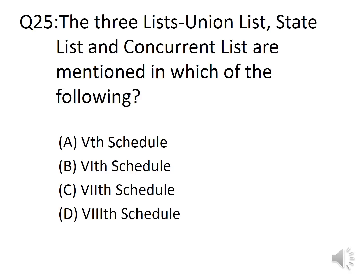Question 25: The three lists — Union List, State List, and Concurrent List — are mentioned in which of the following? Options: A. Fifth Schedule, B. Sixth Schedule, C. Seventh Schedule, D. Eighth Schedule. The answer is Option C, Seventh Schedule.